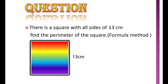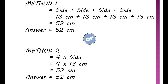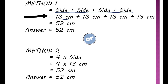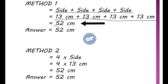Now there is a question for you all. There is a scrap with all sides of 13 cm — find the perimeter of the scrap. There are two methods to solve this question. In the first method, we add all the sides: side plus side plus side plus side, that is 13 cm plus 13 cm plus 13 cm plus 13 cm, which equals 52 cm.